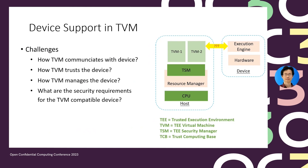For example, because the VMM is the resource manager and is untrusted, how does the TVM communicate with the device? When a TVM communicates with a device, how can the TVM ensure it's the right device it can trust and not a malicious one? A platform may have multiple isolated TVMs and multiple devices ready to accept workloads — how does the TVM manage those devices?